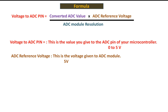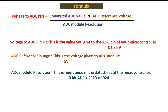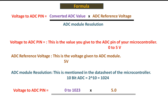For the ADC reference voltage, the PIC has a built-in ADC module, and whatever voltage we give to the PIC is automatically transferred to the ADC module — so 5 volts here. The ADC module resolution: checking the PIC16F877A datasheet, it has a 10-bit ADC, meaning 2 to the power of 10 equals 1024 values. So the converted ADC value can vary from 0 to 1023, multiplied by 5 volts, divided by 1024. Simple as that.